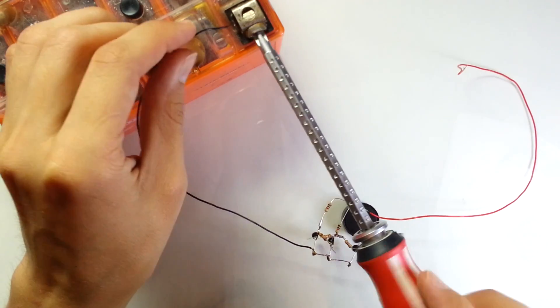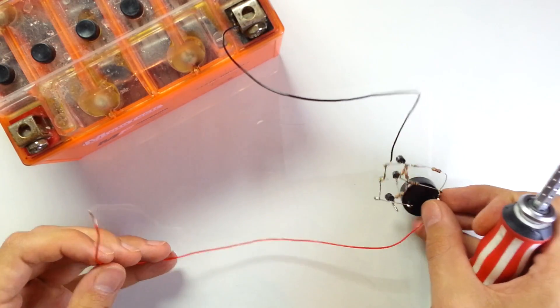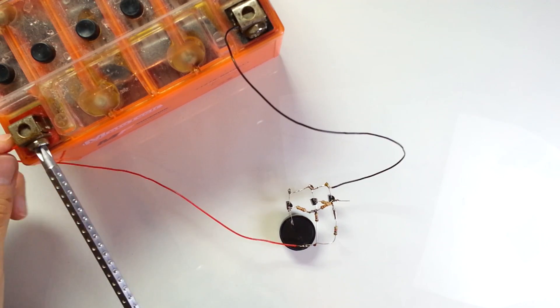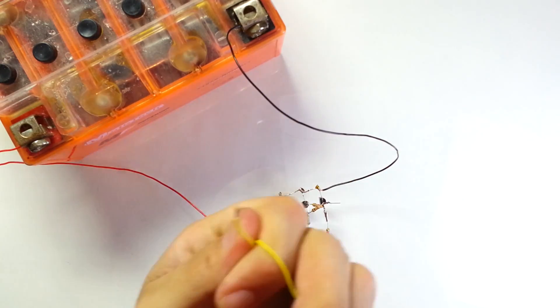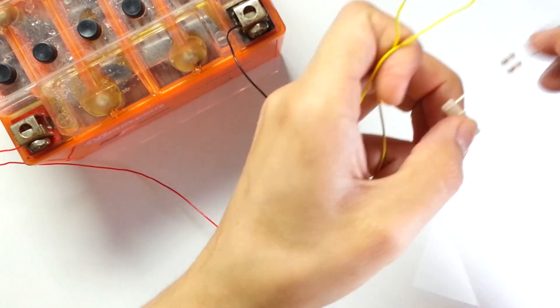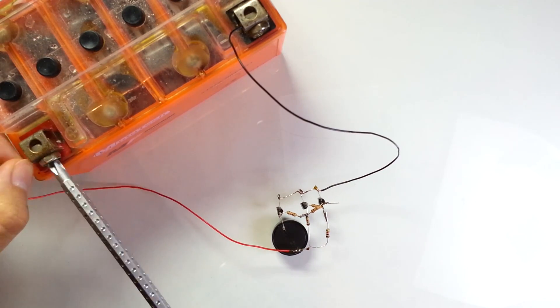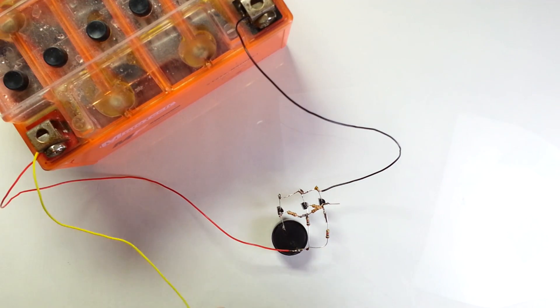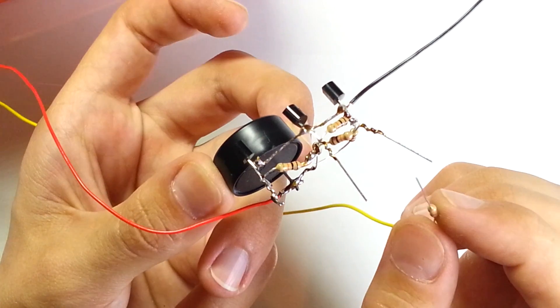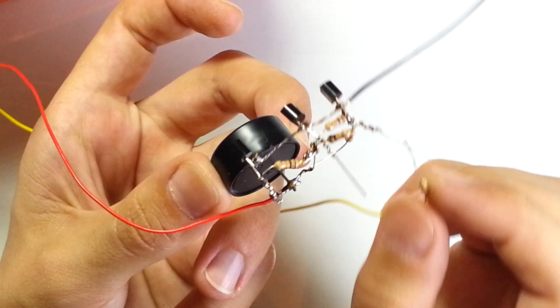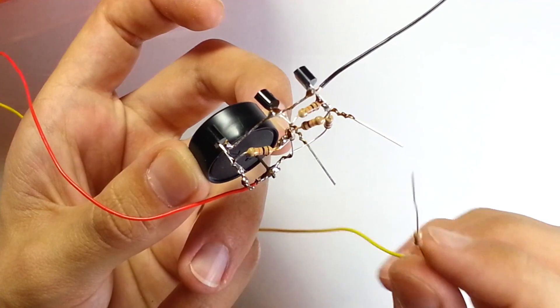Before we go any further, let's test this part of the circuit. For testing, we need to connect this circuit to a power source. I will use a 12-volt battery. In order to test this device, I'll connect a 10 kOhm resistor to this yellow wire and connect this wire to the plus lead of the battery. Now when I touch the base lead of transistor Q2, it activates the buzzer. When I touch the base lead of transistor Q3, it turns the buzzer off.